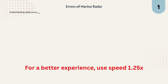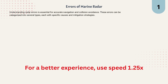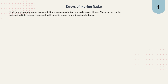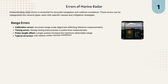Let's talk about errors in marine radar. For accurate navigation and collision avoidance, it's important to understand where mistakes can happen. First, range errors. These occur when the radar misjudges distance. Calibration errors can cause the range scale to misalign. Timing errors may lead to inaccuracies in pulse measurement, and longer pulse lengths increase the minimum detectable range. Under normal conditions, the typical accuracy is about plus or minus 30 meters.